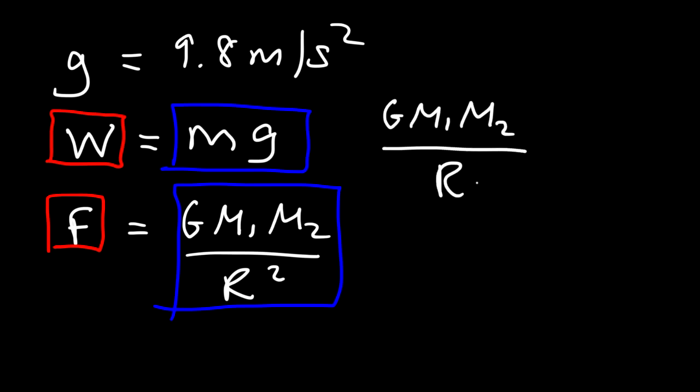Now all we need to do is cancel one of the masses. It really doesn't matter which mass you cancel, m1 or m2. So the gravitational acceleration of a planet is the gravitational constant times the mass of the planet over r squared. So let's calculate it for the Earth.